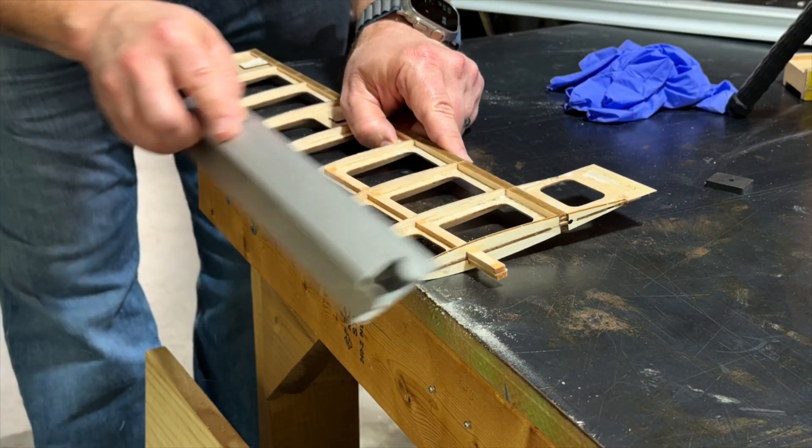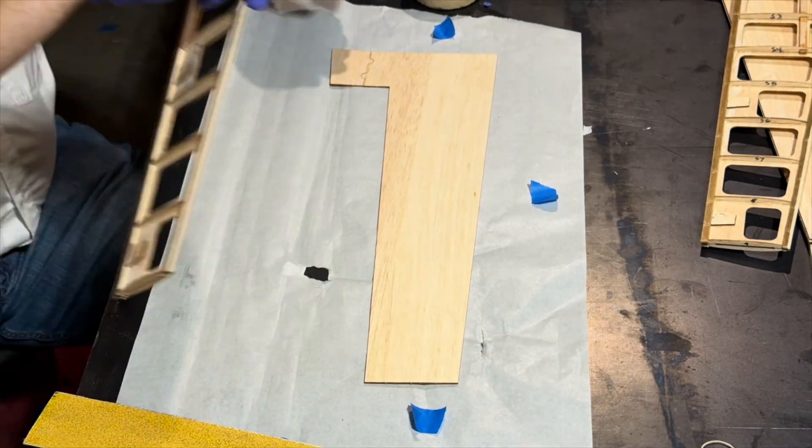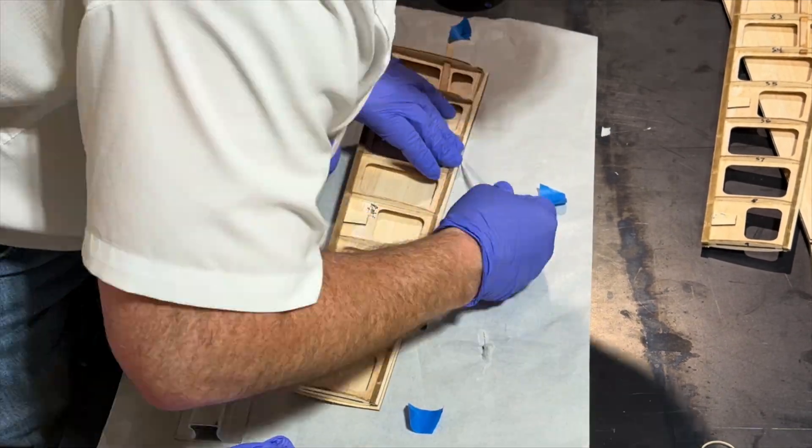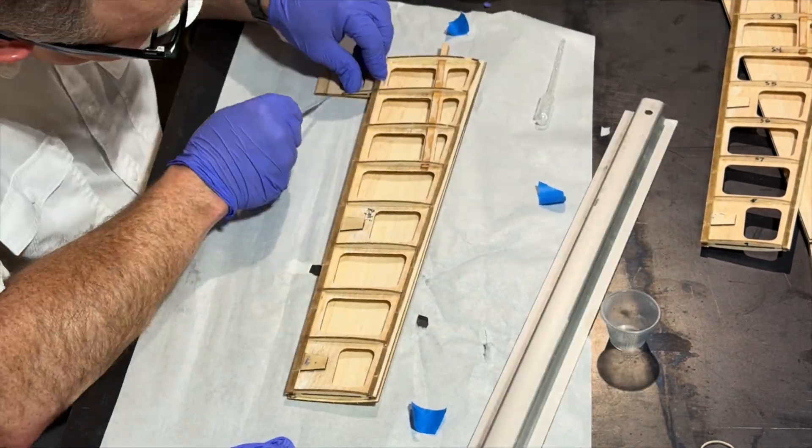So what we're doing before we put the skins on, we are shaping the leading edge. And now we're just putting some glue on and putting on our skins, which is really pretty straightforward.